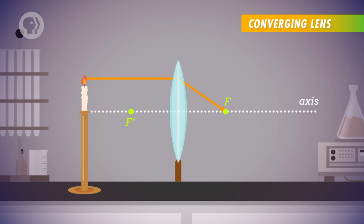Since the focal length is the same on both sides, we draw a second ray from the top of the candle, through the F prime focal point, which then reflects through the lens and travels parallel to the axis.